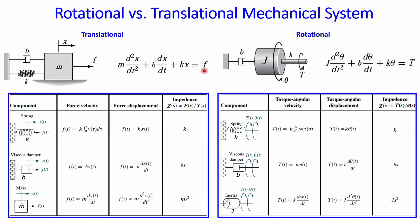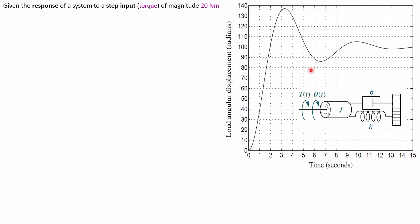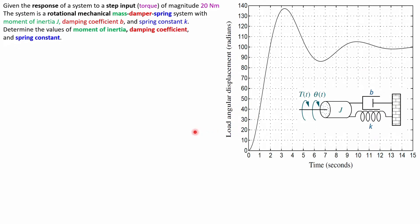Now let's discuss our example. We have a rotational mechanical system with a mass, damper, and rotational spring. A step input torque of magnitude 20 Newton meters is applied. We want to determine the moment of inertia J, damping coefficient b, and spring constant k. The black line in the plot is the system response.